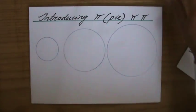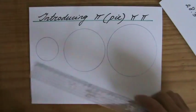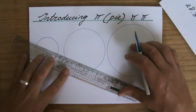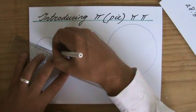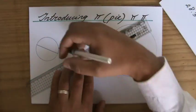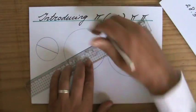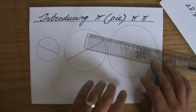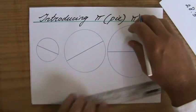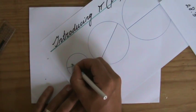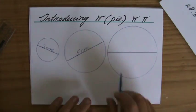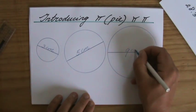I drew three circles, and using those circles we're going to have a look at what Pi is. The smallest circle has a diameter of three centimeters — that line through the midpoint, from one side of the circumference to the other. The medium-sized circle has a diameter of five centimeters. Diameters do not necessarily have to be horizontal; the length is equal regardless of how you draw it, as long as it goes through the midpoint. The largest circle has a diameter of nine centimeters.